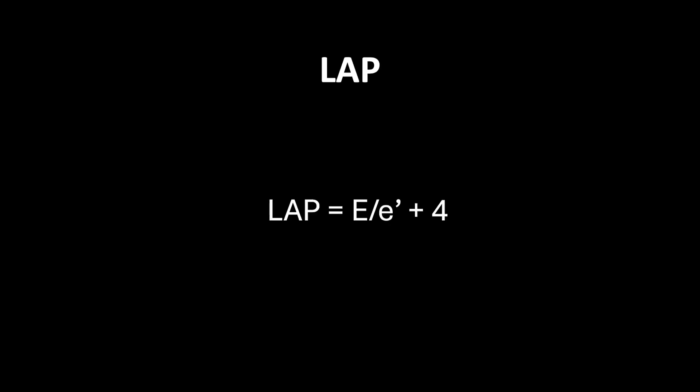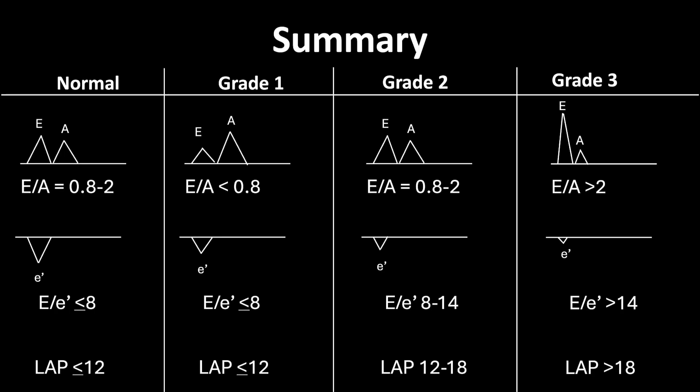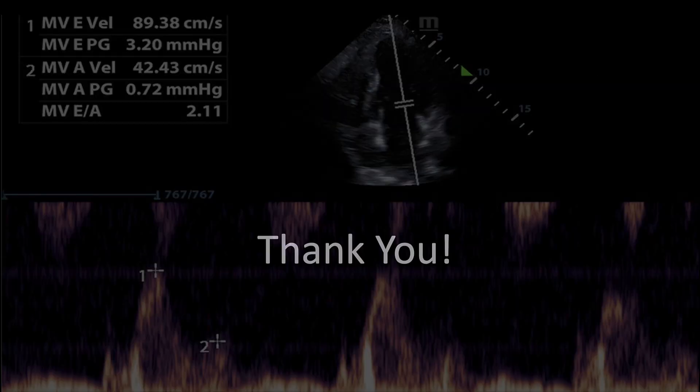A quick way to estimate LA pressure is to take the E over E-prime value plus 4. This summary slide outlines the different wave patterns and values seen depending on the grade of diastolic dysfunction. In grade 1, LA pressure is still less than or equal to 12; as dysfunction worsens, LA pressure increases. I hope this was helpful — thank you for listening, and see you next time.